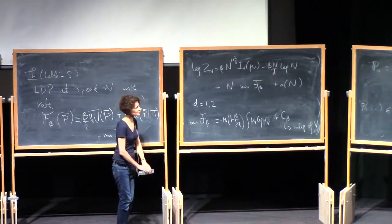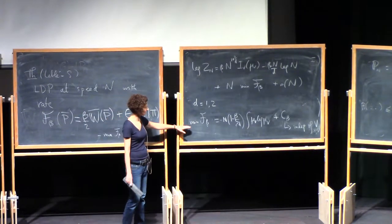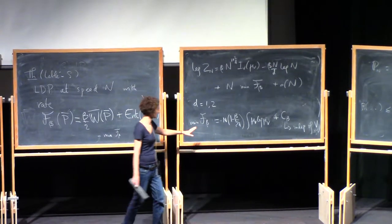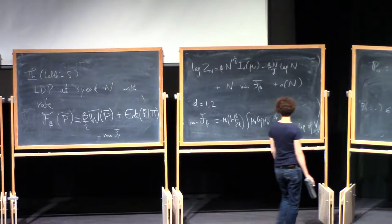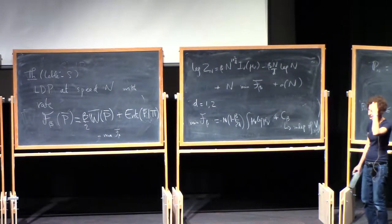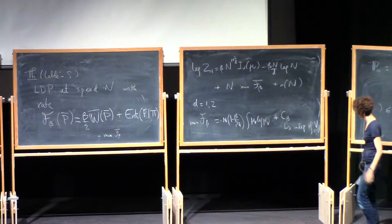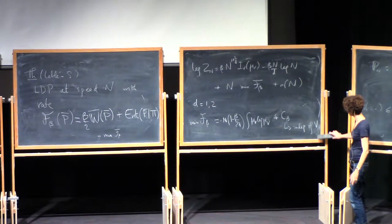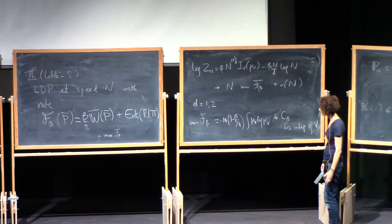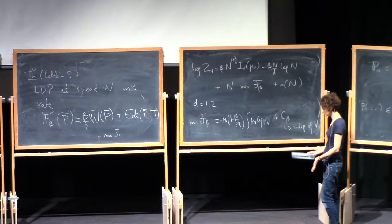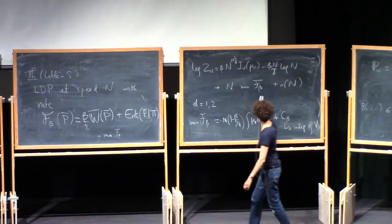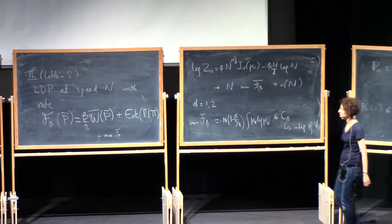In dimensions one and two, such an expansion was known — I mentioned yesterday the results of Chafaï, Gozlan-Zitt, etc. They have stronger assumptions on V though; they usually assume a lot of regularity. What is nice here is that it can work for critical cases, and also it works in any dimension — so that's new.